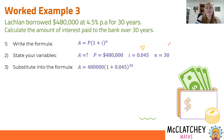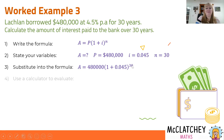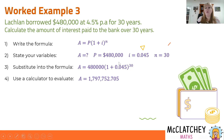I definitely wouldn't want to work this out one year after another for 30 entries in a table — the formula really saves time. Substitute into the formula: use BOMDAS, add 1 and 0.045, raise that to the power of 30 on your calculator, then multiply by 480,000. Alternatively, type it into your calculator with brackets. Once you do that, you get a really big answer.